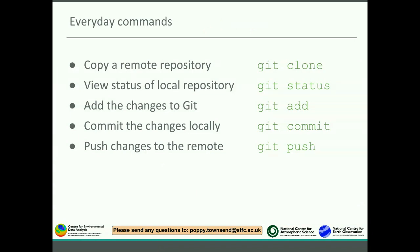Here are a few basic commands that you might use every day. We've gone through git clone, which copies a remote repository to your computer. There's git status, which is very useful — it shows the status of your local repository. Git add will add changes to git. Git commit is essentially like a save, committing your local changes locally. And then git push puts it back onto GitHub or whatever your remote repository is. We're going to go through those commands in the context of something you might do every day to edit and update your files.